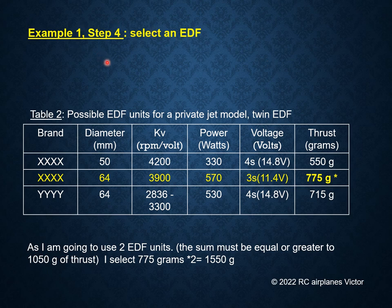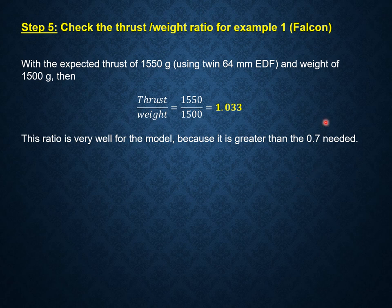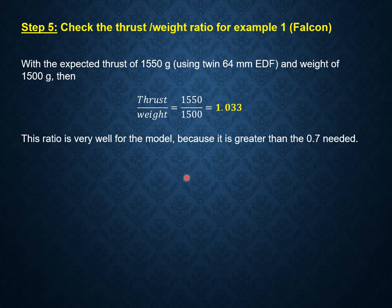For step 4, selecting an EDF: this table shows possible EDF units for my jet. Remember that we have 2 EDFs. I select this one here, which has 775 grams of thrust. As we have 2 units, the total will be 1,550 grams. With my expected thrust of 1,550 grams and my weight of 1,550 grams, the thrust-to-weight ratio is 1.033. This ratio is very good for the model because it is greater than the needed 0.7. Remember, this ratio is not permanent — it will diminish when the battery voltage drops during the flight.